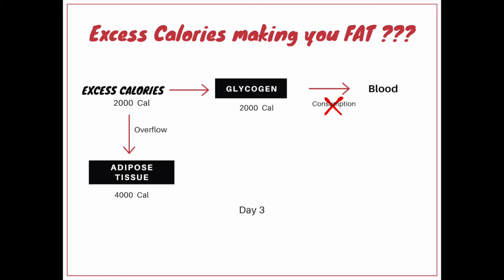On day three, again he has consumed 4000, utilized 2000, and the excess is 2000. This 2000 will not go to glycogen because glycogen is full — it will overflow to adipose tissue again, making the total adipose tissue calories around 4000. According to scientific research, approximately 3500 calories, if not utilized and deposited in adipose tissue, will increase the person's weight by half a kilogram, accommodated in the waistline, increasing its size.